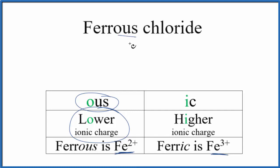Because it says ferrous, we're going with the Fe2+. That gives us Fe, which will be 2+, and then the chloride ion, Cl, which is 1-.